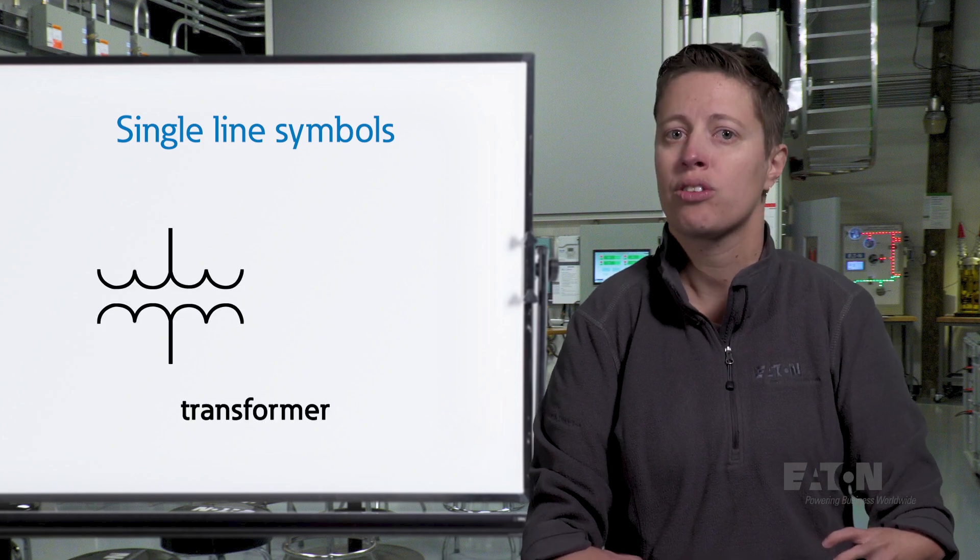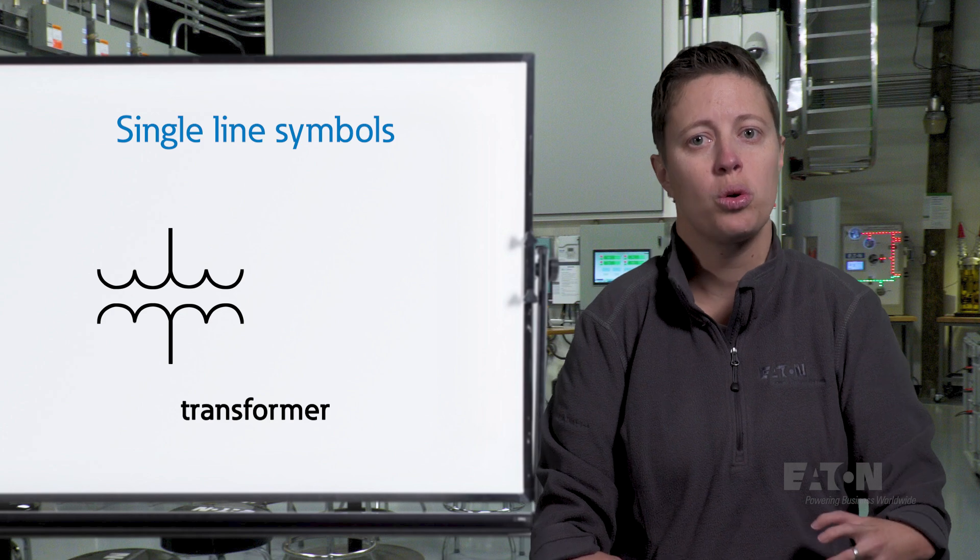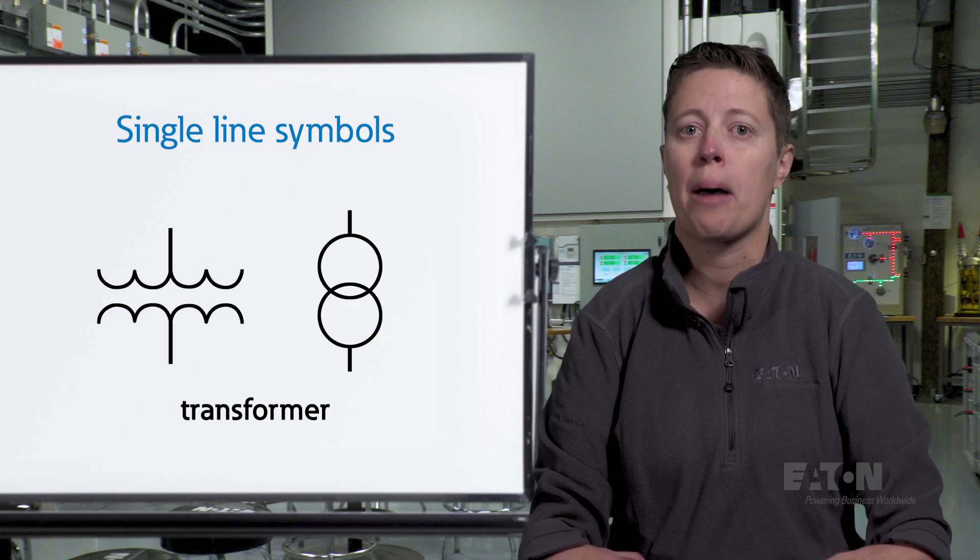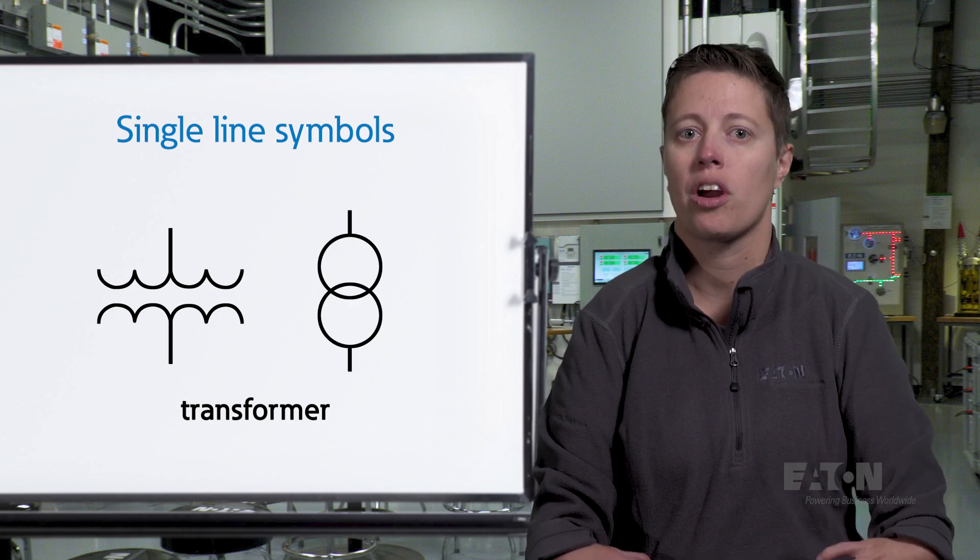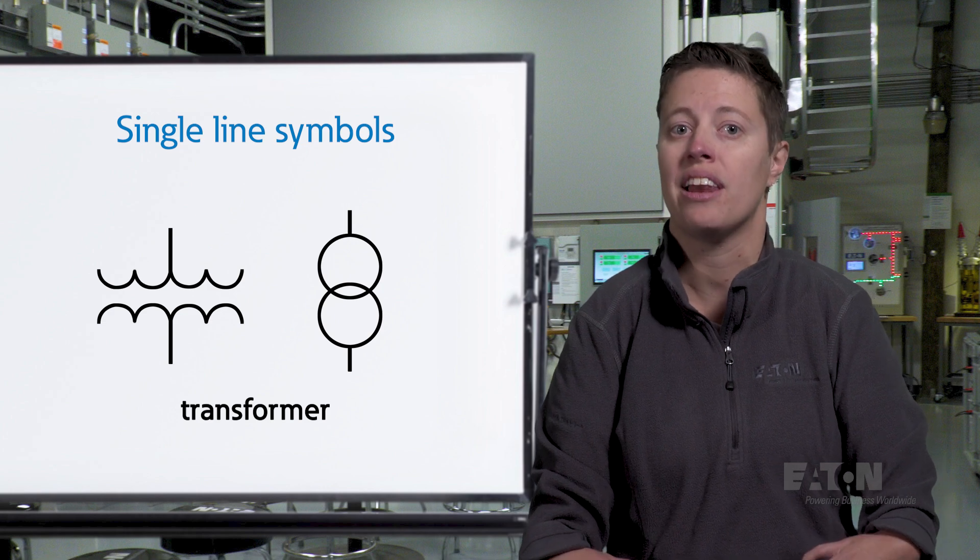First, we have a transformer symbol. It looks like two coils or sometimes overlapping circles. Transformers are used to change the voltage levels in an electrical system.